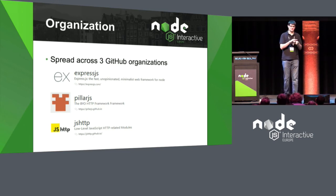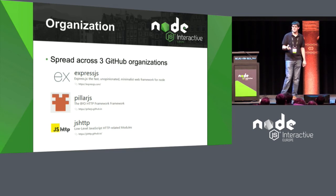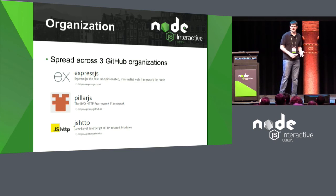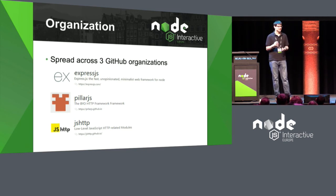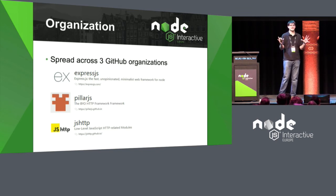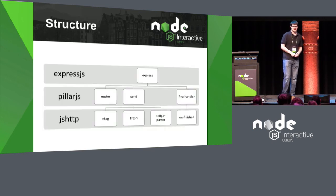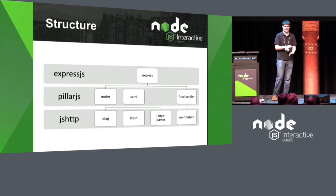JS HTTP is where we keep all our low-level HTTP related things. Traditionally, people got to this in old Express days by requiring Express and accessing an export called `utils`. You get things like: how do you generate ETags, how do you parse content type headers, stringify them, parse range headers, and all kinds of different things. In Node core it's possible to do certain things, but you have to add a ton of event listeners. So we bundle them into things like `on-finished` and `on-headers` to add hooks into Node core much more easily.